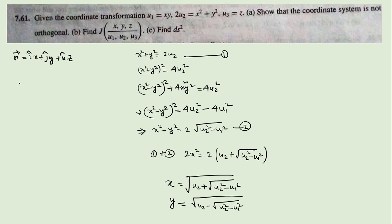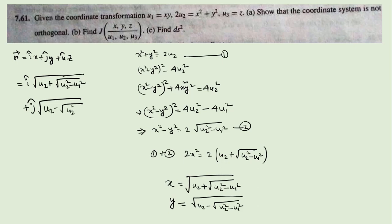The r vector will therefore be: r = i-cap · √(u2 + √(u2² - u1²)) + j-cap · √(u2 - √(u2² - u1²)) + k-cap · z.